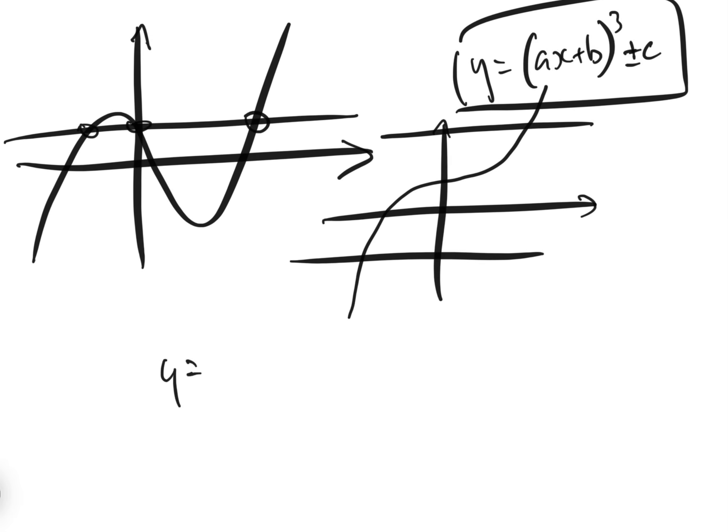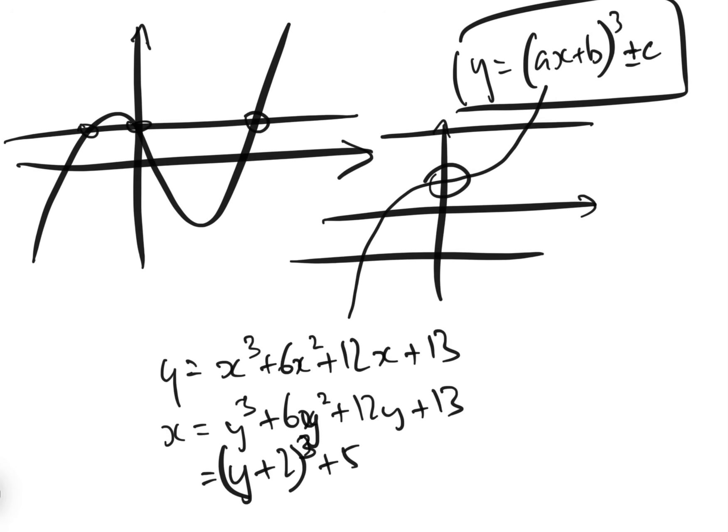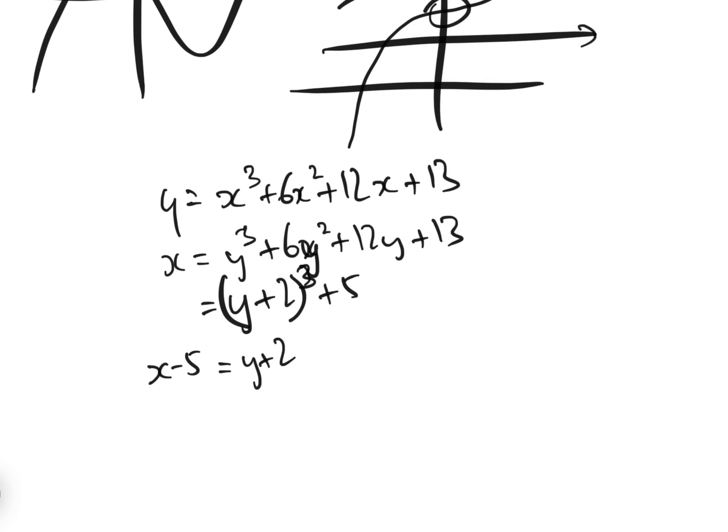So if we got y equals, what was the question again, y equals x cubed plus 6x squared plus 12x plus 13, given that we know probably it's only got an inflection point, and therefore it hasn't got more than one root, we could therefore say, to find the inverse, so we go x equals y cubed plus 6y squared plus 12y plus 13, and so now what we need to do is factorize this, and we will find that it's (y plus 2) cubed plus 5, and therefore we have x minus 5 equals (y plus 2) cubed, therefore y equals the cube root of (x minus 5) minus 2, and that is the inverse function.